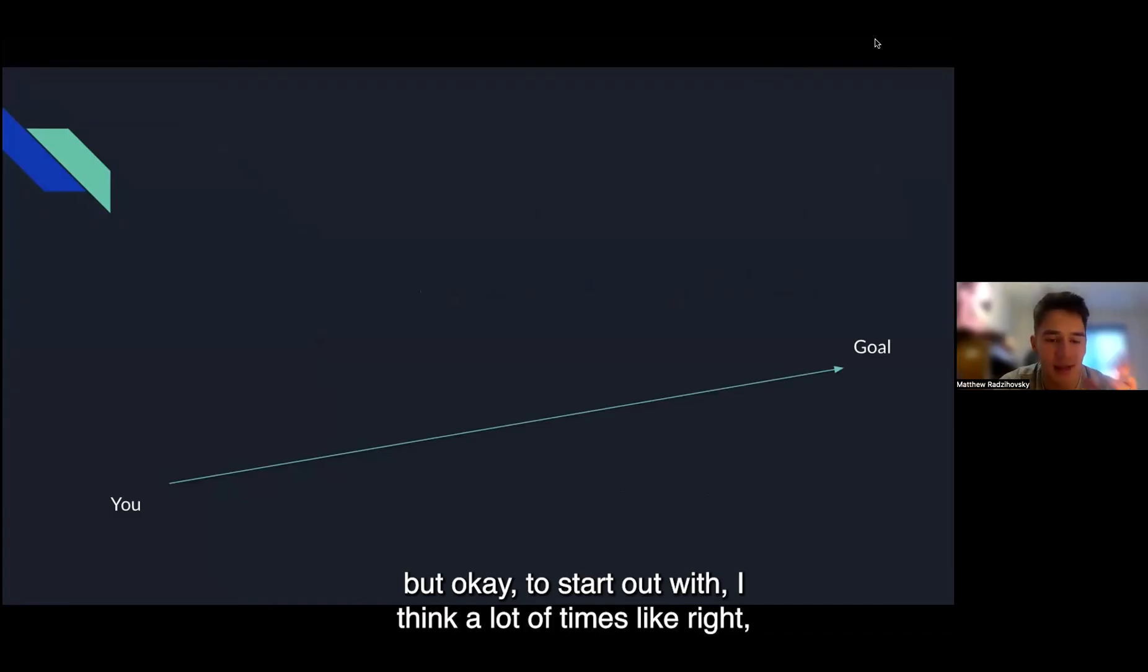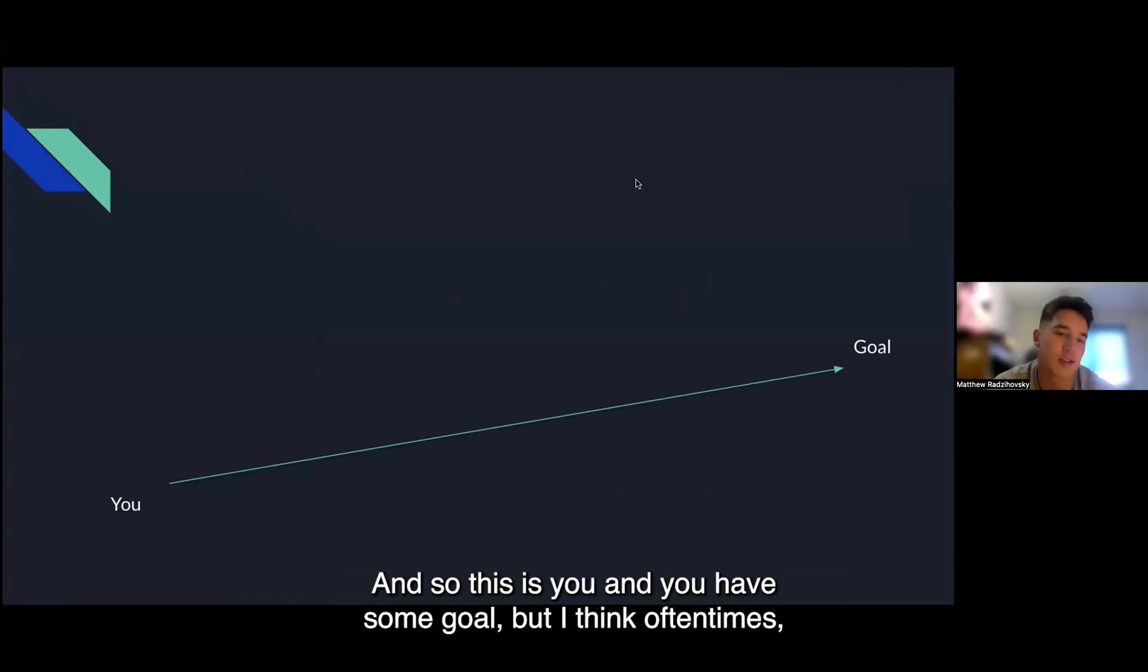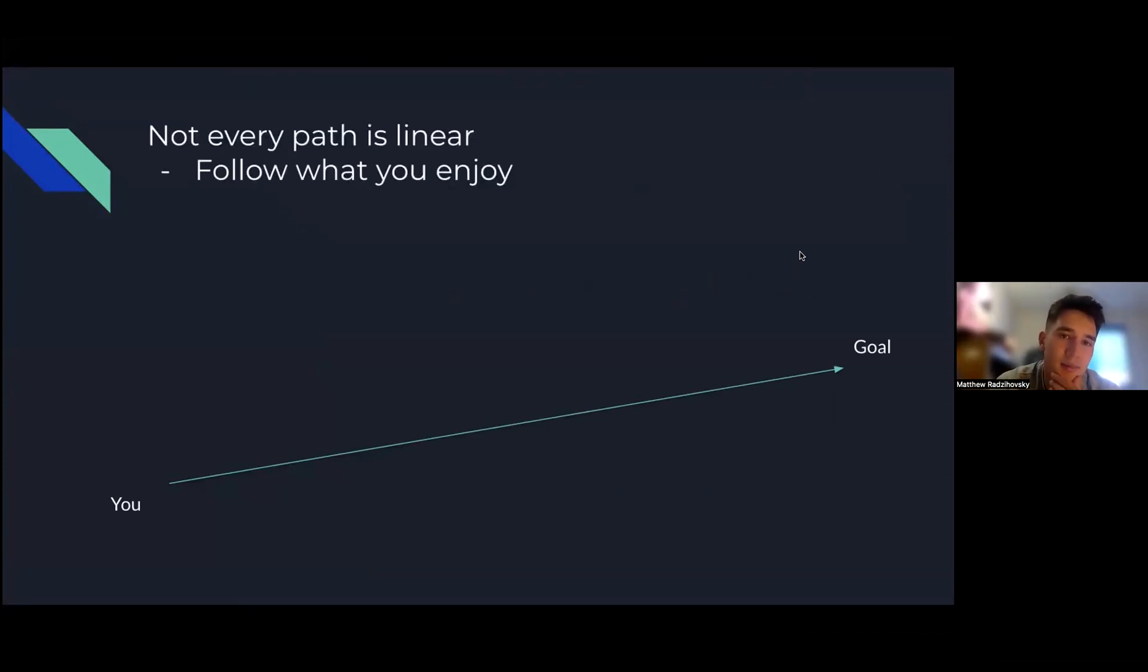To start out with, I think a lot of times you hear that there might be a linear path - maybe you want to work at a tech company, you want to do AI research, things like that. So this is you and you have some goal, but I think oftentimes not every path is linear.